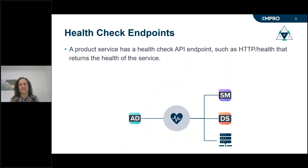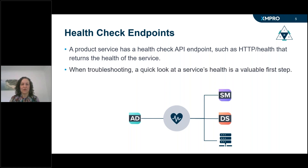Our health check endpoint is precisely as it sounds. A product service has a health check API endpoint — such as http/health — that returns the health of the service. When it is called, the API endpoint handler performs various checks and responds with the simple status of the API and its dependencies. When IT is troubleshooting, health checks are the industry standard for the first diagnostic step. They quickly indicate connectivity health, either highlighting an issue such as access to a database, or allowing the troubleshooter to rule out connectivity and move on to their next check.